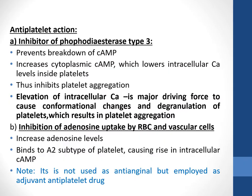Coming to the antiplatelet mechanism, dipyridamole performs its antiplatelet action by two scenarios. The first is inhibition of phosphodiesterase type 3 enzyme, which prevents the breakdown of cyclic AMP, increases cytoplasmic cyclic AMP, lowers intracellular calcium levels inside platelets, and thus inhibits platelet aggregation. Elevation of intracellular calcium is a major driving force causing conformational changes and degranulation of platelets. The second mechanism is inhibiting adenosine uptake by RBCs and vascular cells, increasing adenosine levels, which binds to the A2 subtype receptor on platelets, causing a rise in intracellular cyclic AMP.